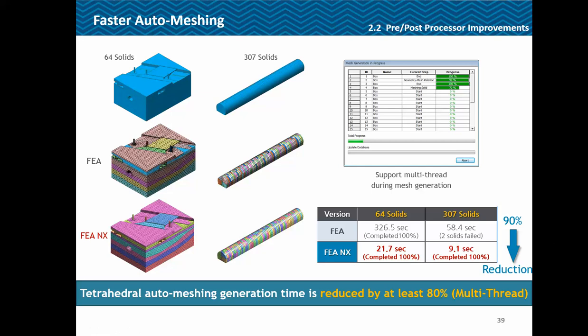Similarly for meshing, with a 64-solid model it took 326 seconds in FEA whereas the same was done in under a minute in FEA NX. For the 307-solid model, it took 1 minute in FEA and was done in under 10 seconds in FEA NX — a 90% reduction. Overall when using tetrahedral auto-mesh, the time is generally reduced by at least 80%.